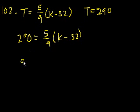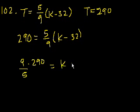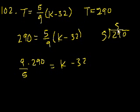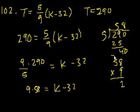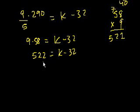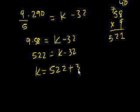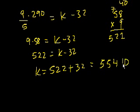So multiply both sides by 9 fifths. You get 9 over 5 times 290 is equal to k minus 32. So what's 290 divided by 5? 5 goes into 29, 58 times. So it's 9 times 58 is equal to k minus 32. 58 times 9, 8 times 9 is 72, 5 times 9 is 45, plus 7 is 52, 522. So 522 is equal to k minus 32. So k is equal to 522 plus 32, which is equal to 554, which is choice D.